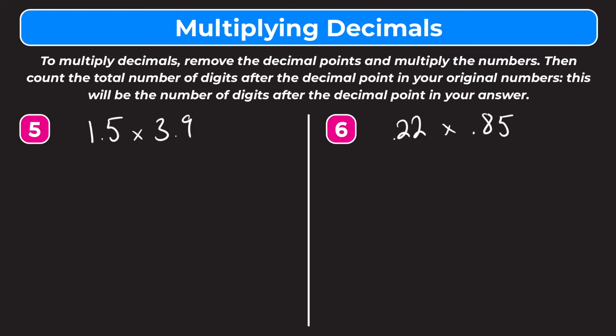For these last two problems, if you want, you can pause the video here and try them on your own, then follow along with me as I go through the solution. For number 5, we have 1 and 5 tenths times 3 and 9 tenths. So let's rewrite this without the decimal points: 15 times 39.